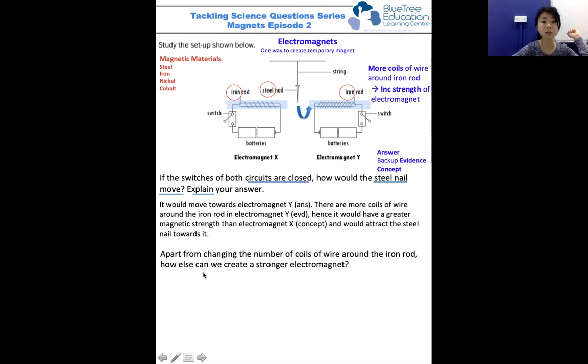The second part of this question is: apart from changing the number of coils of wire around the iron rod, how can we create a stronger electromagnet? There are two ways - one is to increase the number of coils, and the second is to increase the number of batteries attached to the circuit. As the number of batteries increases, there will be more electric current passing through the circuit and the electromagnet will be stronger.